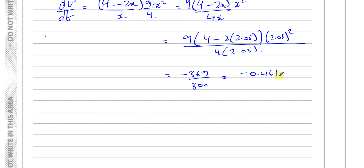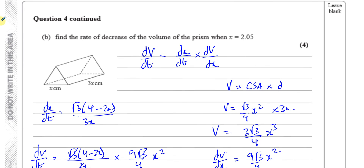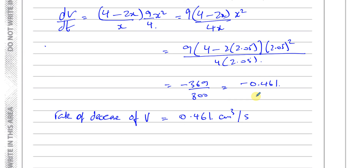Writing that to 3 significant figures, the rate of decrease of the volume is 0.461 centimeters cubed per second. When we say rate of decrease, we quote the positive value — the negative sign indicates it is decreasing. So the rate of decrease is 0.461 cm³/s, and that completes question number 4. This is a question about rates of change within the differentiation topic in P4. You'll find other questions from this paper in the playlist. Thank you for watching.